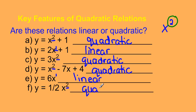They're quite easy to spot. The graph of a quadratic is a parabola, and the graph of a linear relation is a straight line.